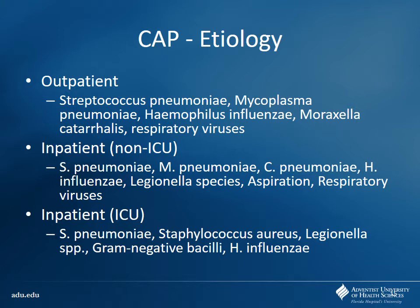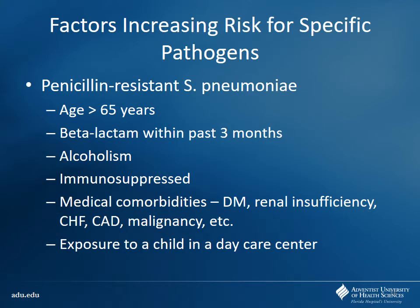On the inpatient side you also worry about Staph aureus, gram-negative bacilli like E. coli, and Pseudomonas. This is where we use broad-spectrum therapy - the big guns - to start, then scale down as cultures and sensitivities come back. The sicker the patient, the bigger the guns, and then we narrow based on culture results.